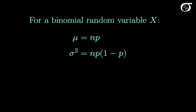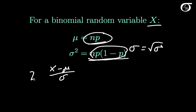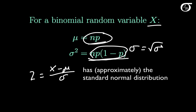If x is a binomial random variable, then x has a mean of nP and a variance of nP(1−P). In certain settings x can be considered approximately normal, and we can standardize in the usual way: z = (x − μ) / σ, where σ is the square root of the variance. This quantity z has approximately the standard normal distribution — normal with mean 0 and variance 1.